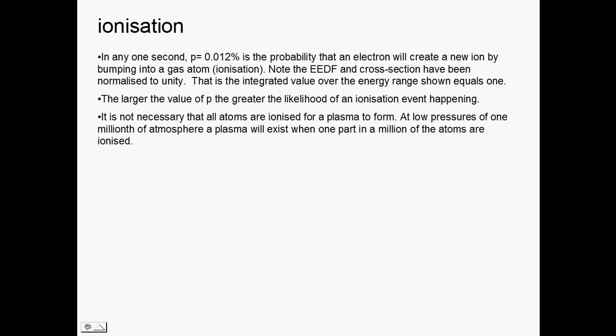It's not necessary that all the atoms are ionized. So at a low pressure, say at one millionth of an atmosphere, that's a pressure just under one millitorr, there would typically be about 10 to the 13 atoms per cc, or about 10 to the 19 atoms per meter cubed at room temperature. So that's 10 to the 19 atoms in a square meter of area or volume.